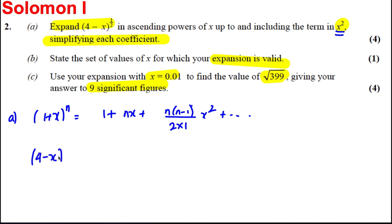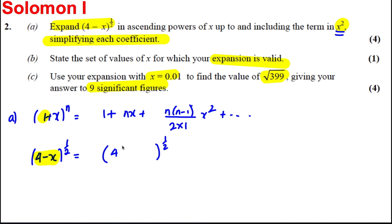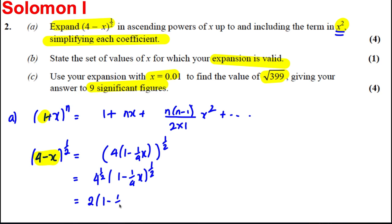The key thing is that our expression is not in the form (1 + something) — we must have a 1 there. So we're going to factorize 4 out of the expression. Taking out 4 gives us 4(1 − x/4), all to the power of a half. That means 4 to the power of a half times (1 − x/4) to the power of a half, and since 4 to the half is 2, this becomes 2(1 − x/4)^(1/2). Now it's in the correct form to expand.